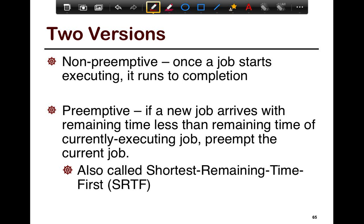There are two versions of the shortest job. One is a non-preemptive one. Once the job starts running, it just runs to completion. And then there's a preemptive one. At any given instant, if a new job arrives with the remaining time less than the remaining time of the current job, then you preempt the current job. And this is known as shortest remaining time first, and we'll look at the benefits of the preemptive versus non-preemptive.